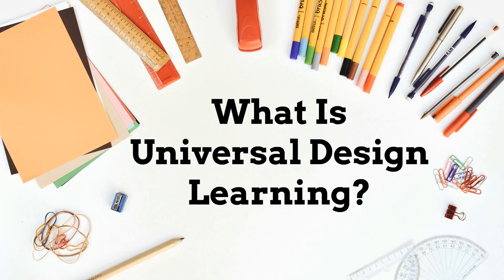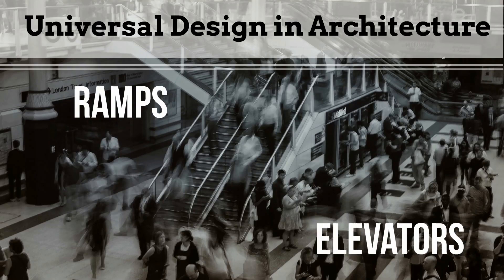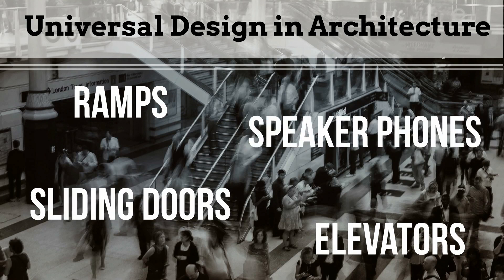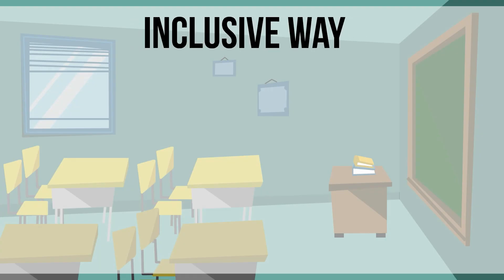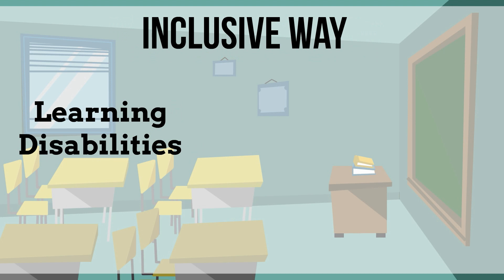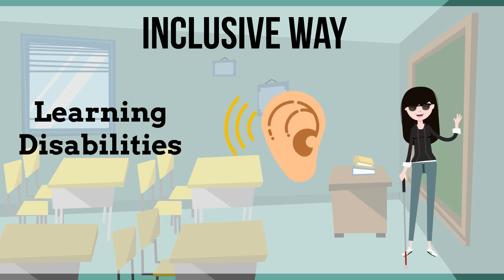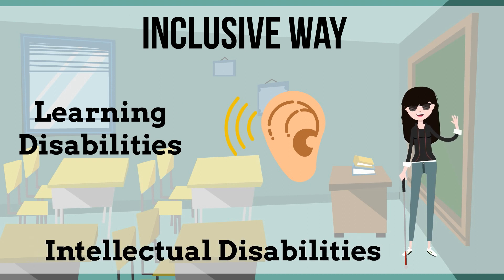What is Universal Design Learning? It evolved out of Universal Design and Architecture. Trainers wanted an inclusive way to teach all students and participants, regardless of ability. This includes people with learning disabilities, such as dyslexia, as well as those with hearing and visual impairments, and those with intellectual disabilities.